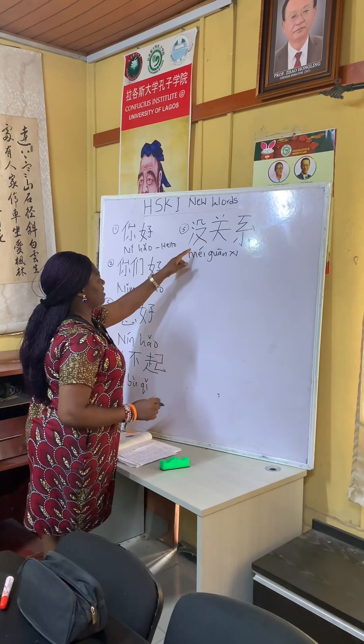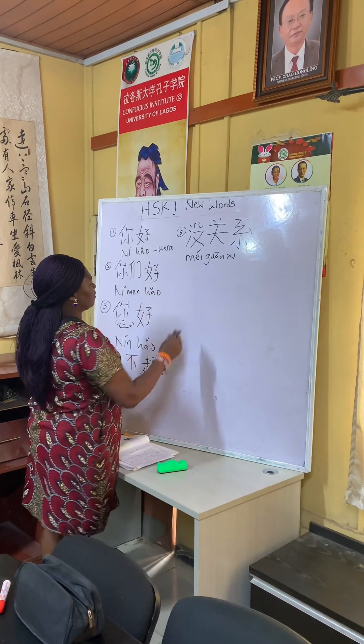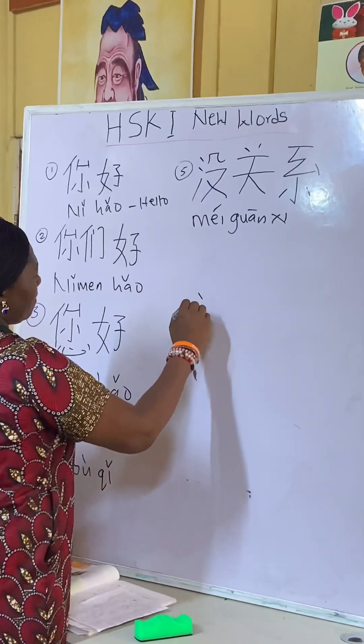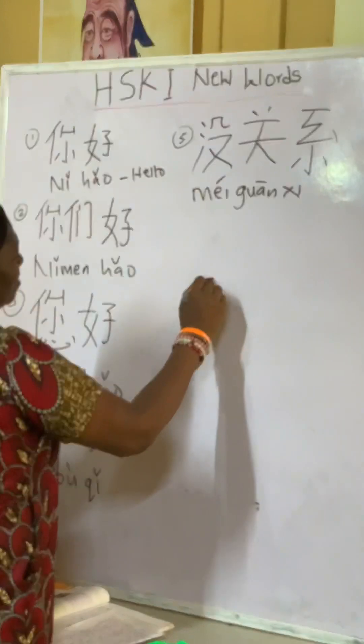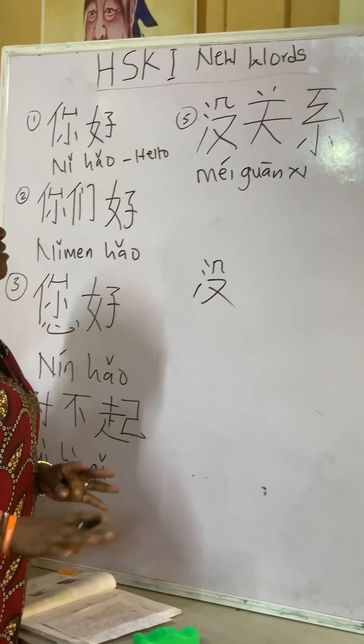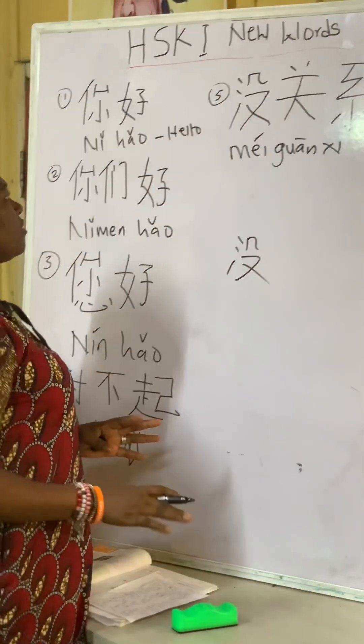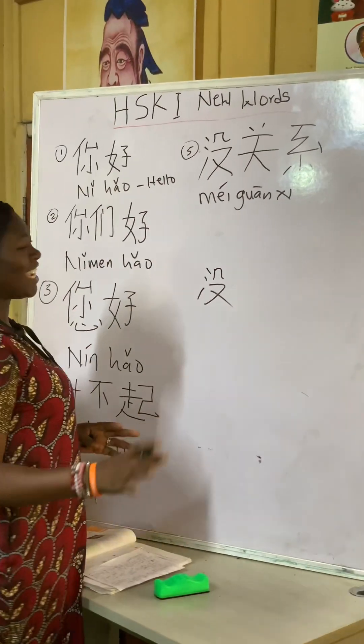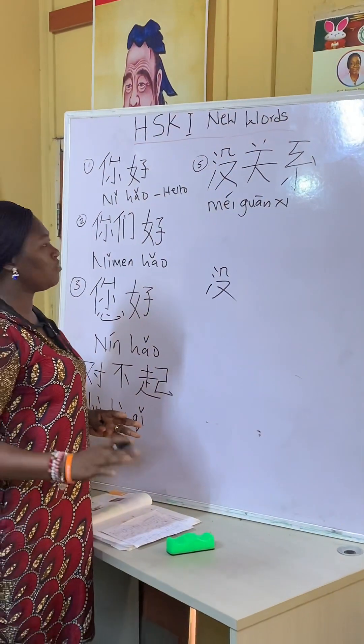Let's explain each character. 没 (méi) means don't, or negative — like no. It is a negative marker.